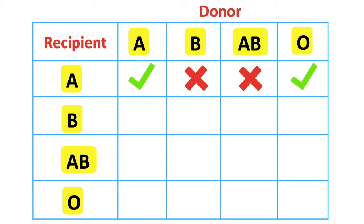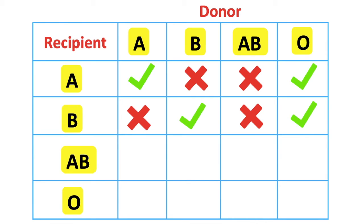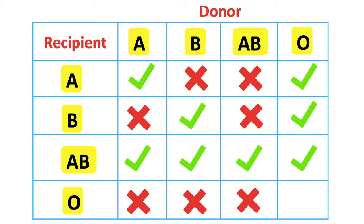A person with type B blood can't receive type A blood due to the anti-A antibodies in their blood. They can receive type B blood, but can't receive type AB blood — although AB blood contains B antigens, it also contains A antigens which will cause an immune response. They can receive type O blood because it doesn't have A or B antigens, so the body won't see it as foreign. A person with AB blood can receive all types of blood because they don't produce antibodies against either antigen. People with type O blood have anti-A and anti-B antibodies, so they can't be given type A, type B, or AB blood — they can only receive type O blood.